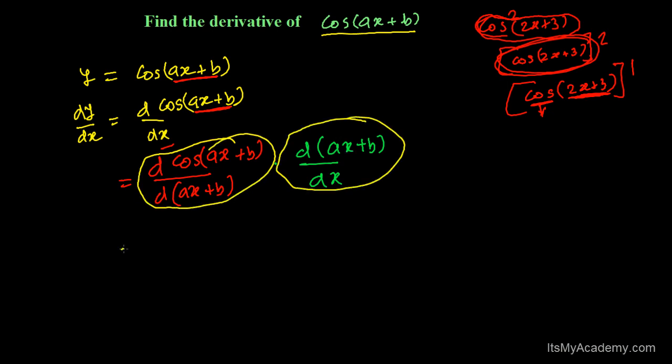I'm finding out the derivative of the first part and that's going to be simple. We have already learned that the derivative of cos theta with respect to theta is minus sine theta. Similarly here, ax + b is the angle and we're differentiating with respect to the angle, so we'll get minus sine(ax + b).